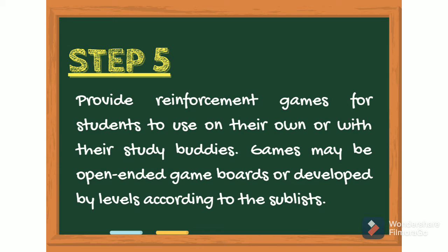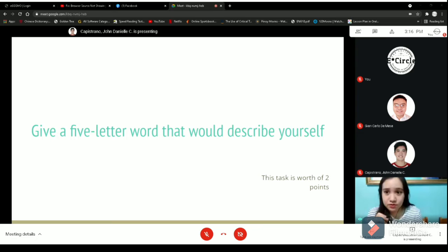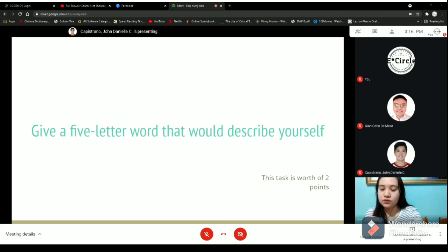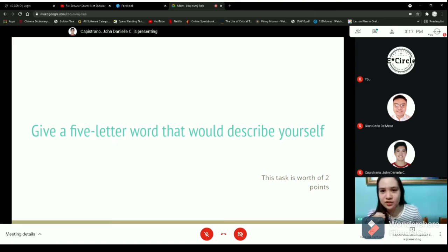Step 5. Provide reinforcement games for students to use on their own or with their study buddies. Games may be open-ended game boards or developed by levels according to the sublists. Are you guys ready? Yes, ma'am. For your first activity, you may help each other — give a five-letter word that would describe yourself. Daniel answered 'jolly.' J-O-L-L-Y. Correct — so he sees himself as a jolly person.